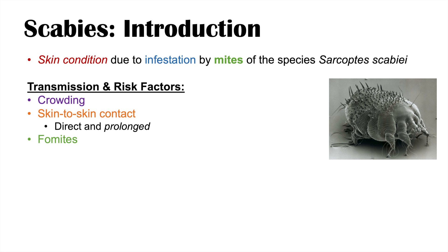Another way scabies can be transmitted is through fomites — things like furniture: chairs, beds, desks, anything that an individual with scabies might have touched, leaving mites behind on those surfaces. Another individual who then touches that surface can have scabies transmitted that way. This is generally not the case in certain types of scabies, but there is one type where transmission via fomites or indirect contact with furniture is more common.